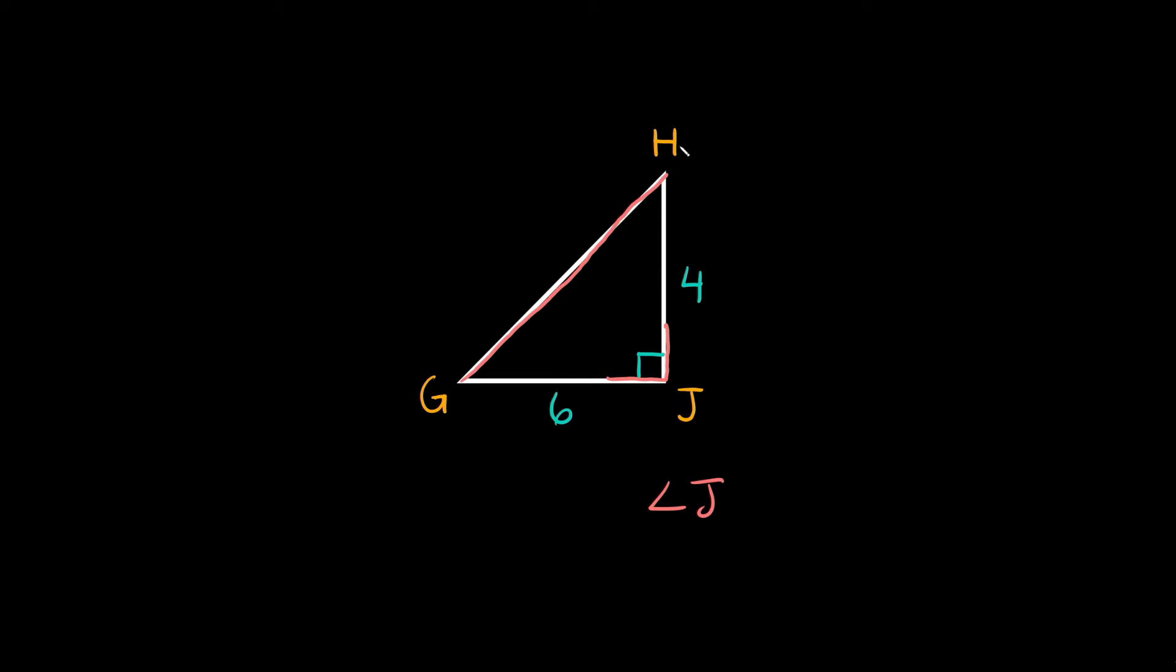Now to sort out these other two, so G and H, well you can see that G over here opens up to the smallest side which is 4, so angle G would be the smallest and then angle H up here you can see opens up to this bottom side which is 6, so angle H is in the middle.